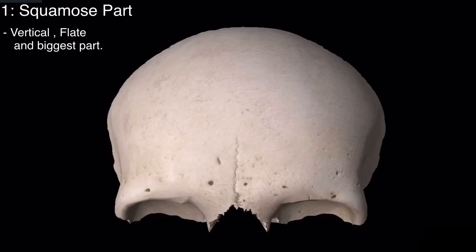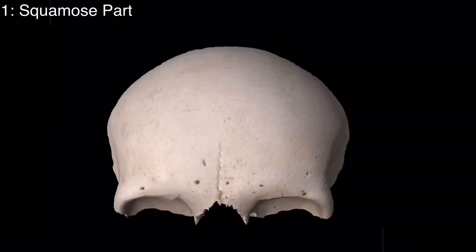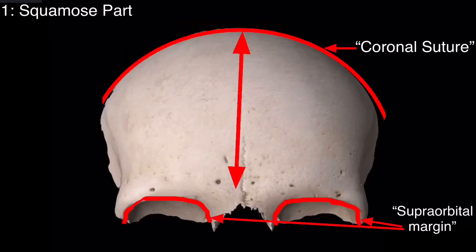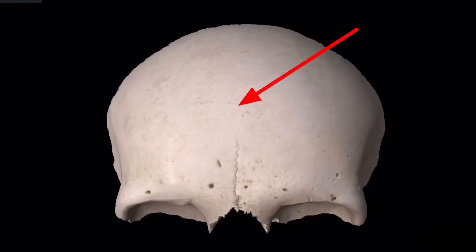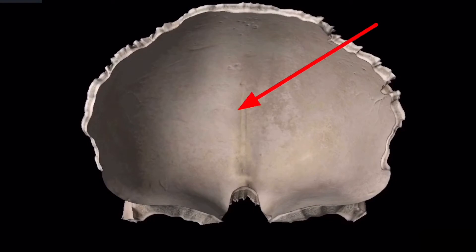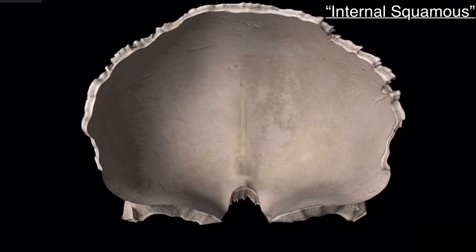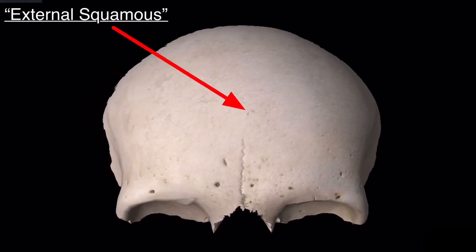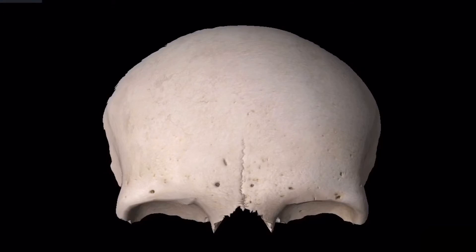The squamous part is the vertical, flat, and biggest part — it is the main region of the forehead. It extends from the coronal suture to the supraorbital margin. In the internal squamous part of the frontal bone is present the frontal lobe of the brain, while the external squamous part forms the main region of the forehead.